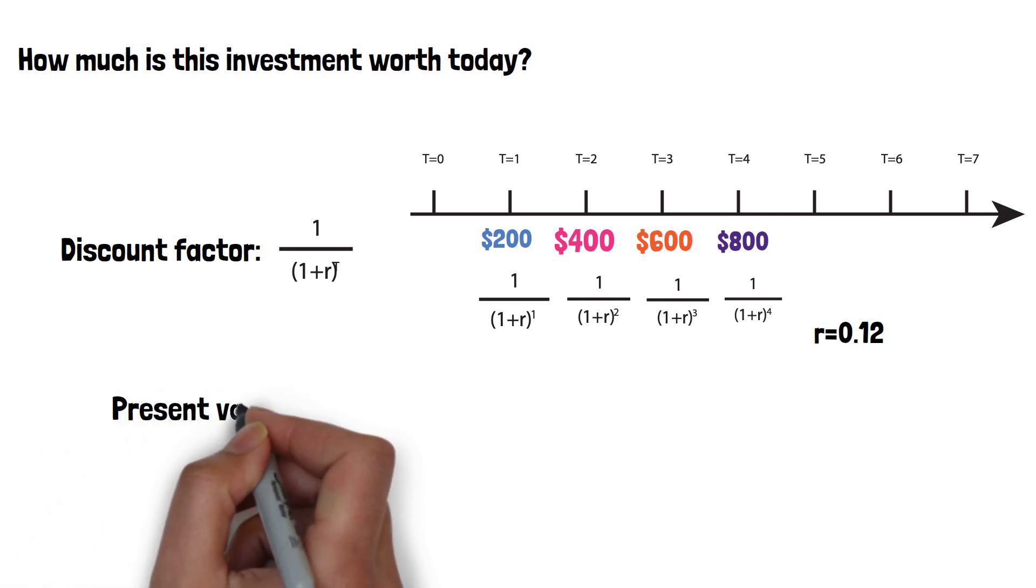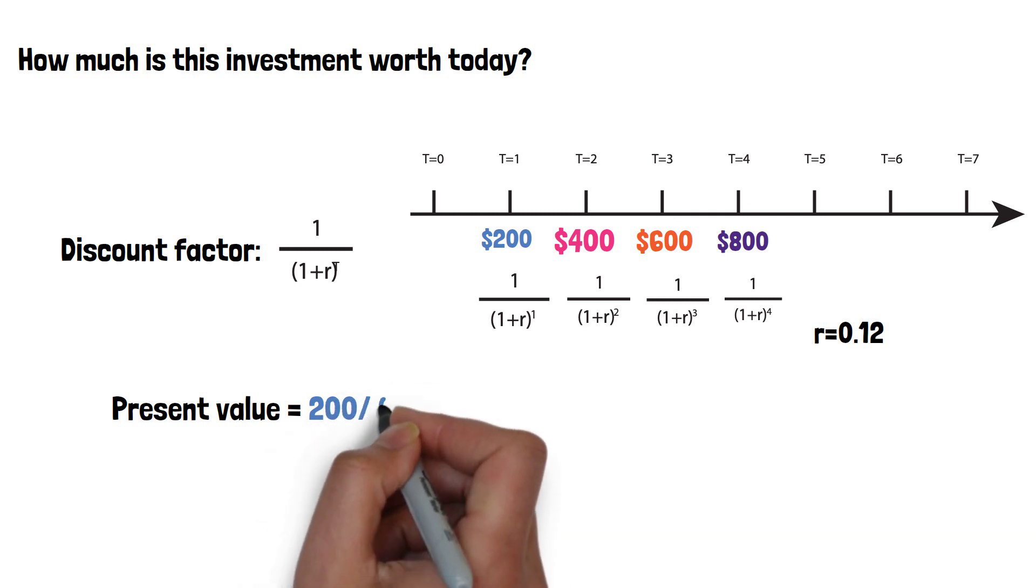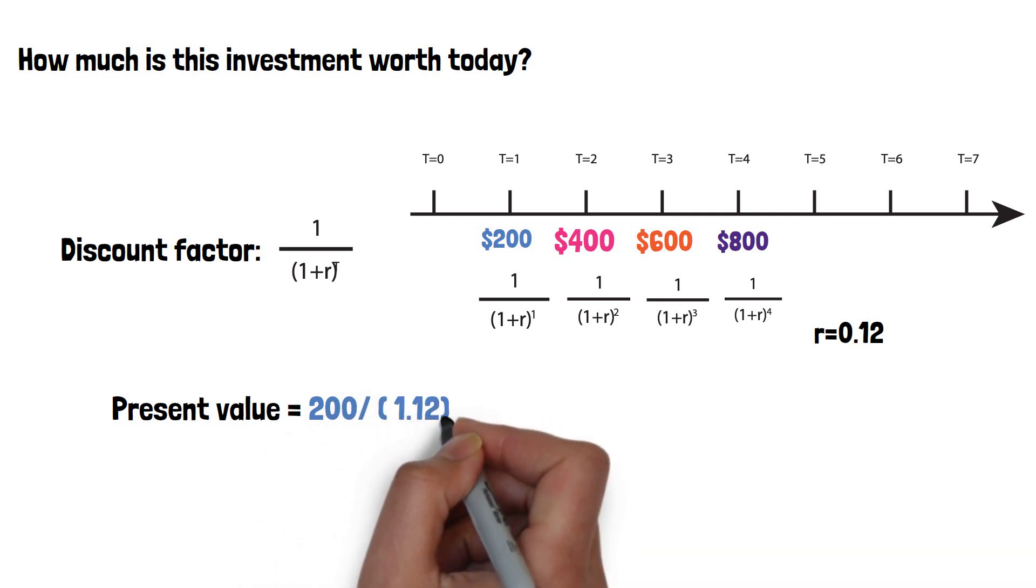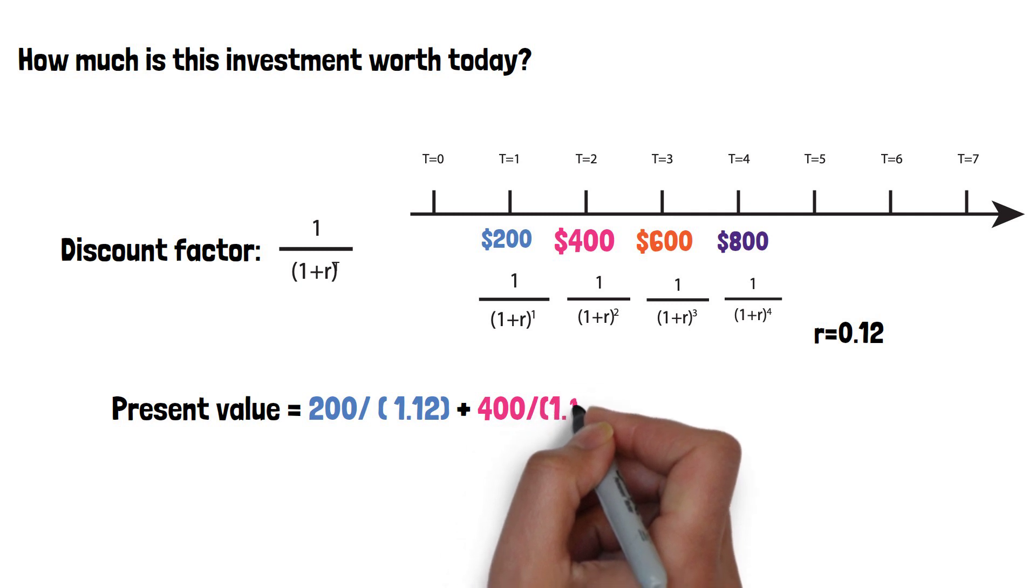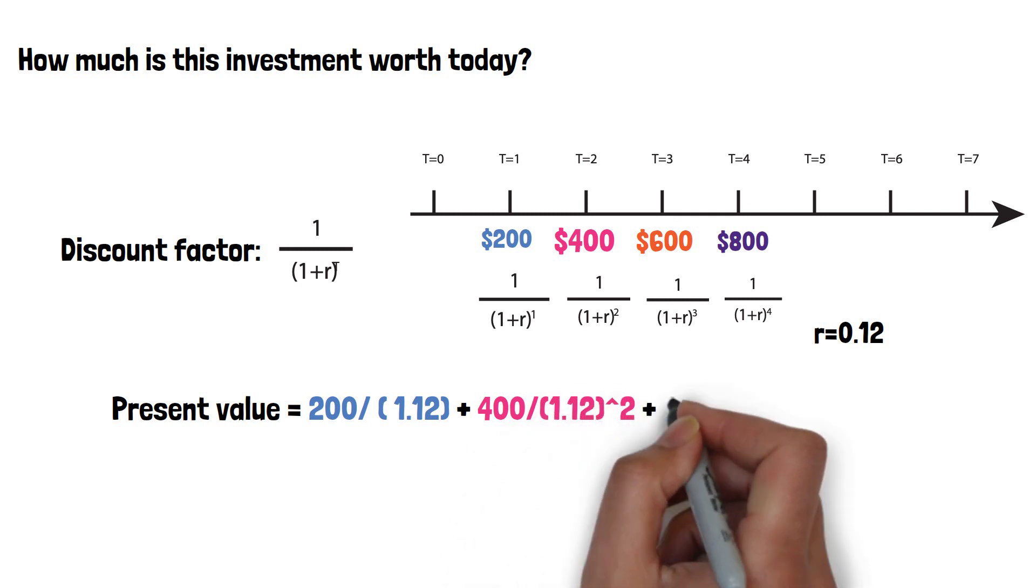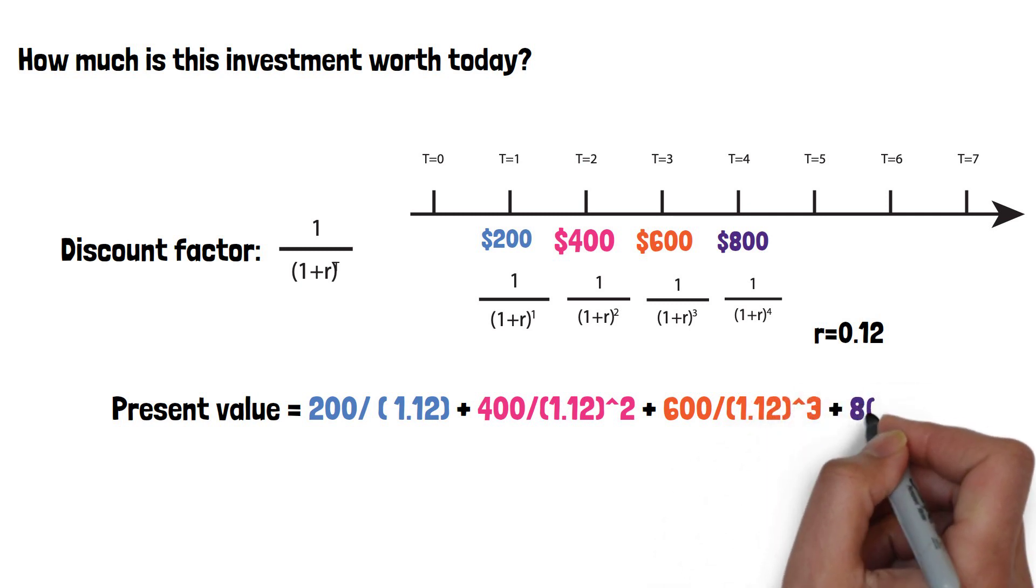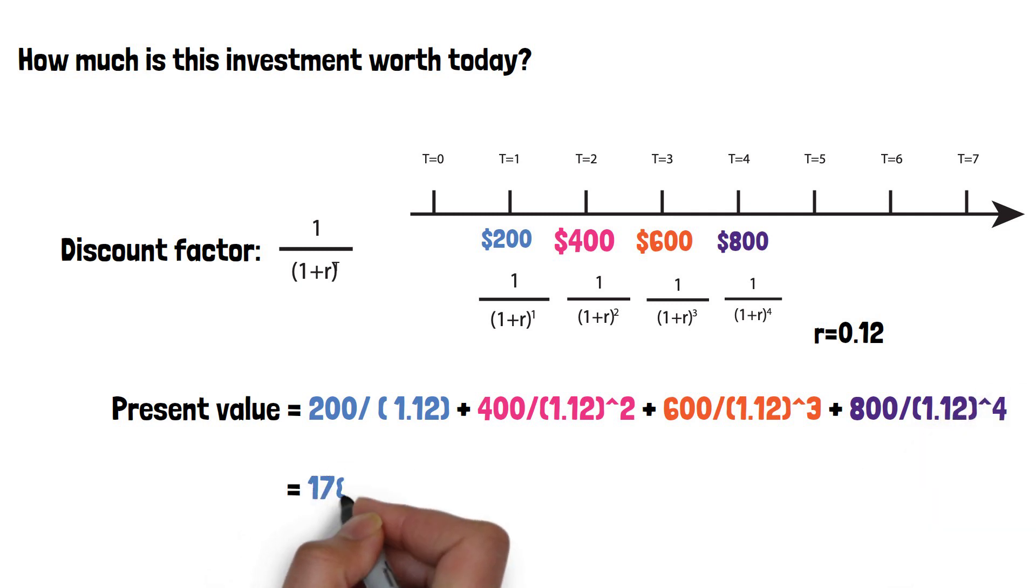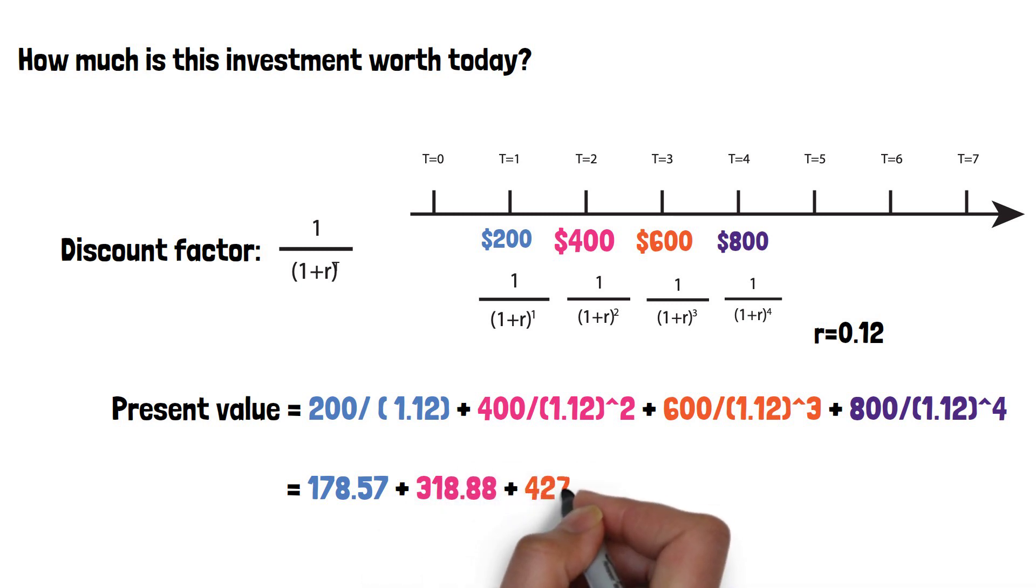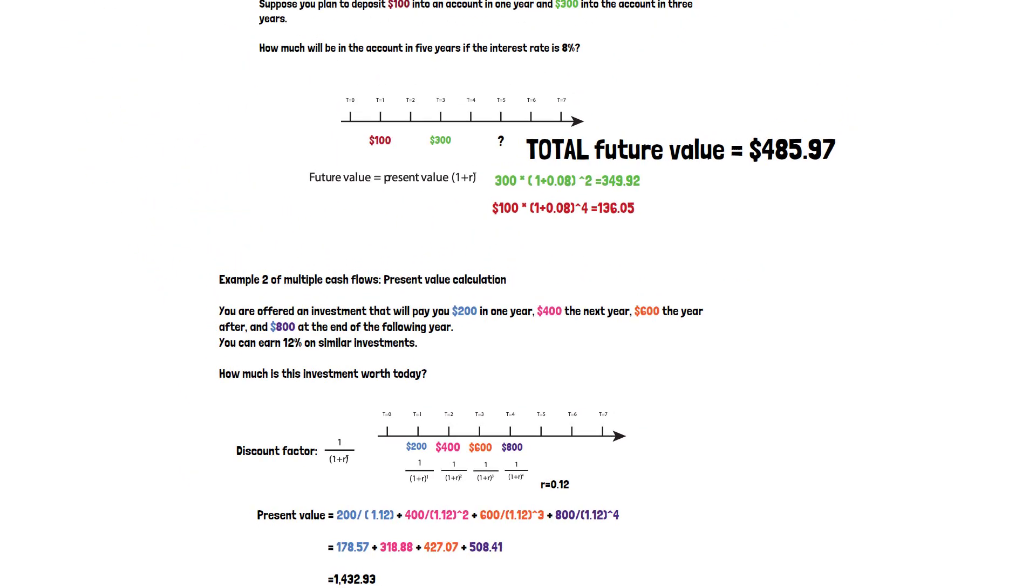Now the present value is the sum of the discounted future cash flows. 200 divided by 1.12 plus 400 divided by 1.12 to the power of 2, and 600 divided by 1.12 to the power of 3, and plus 800 divided by 1.12 to the power of 4. We can calculate the present value of each single cash flow, and then we add them up. We get the total present value is $1,432.93.